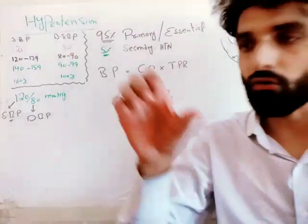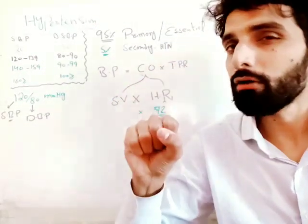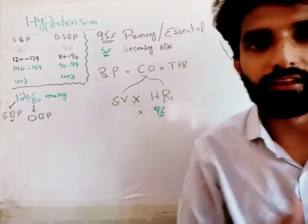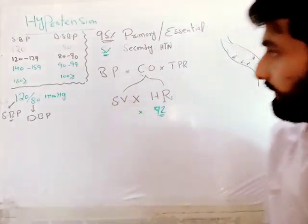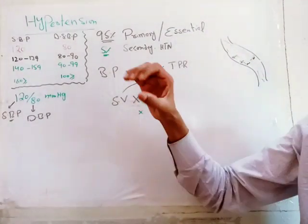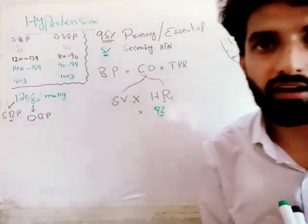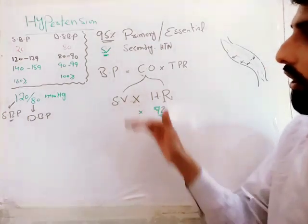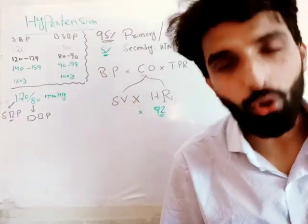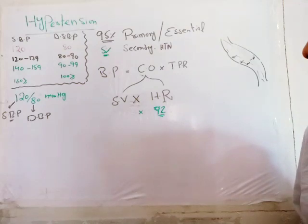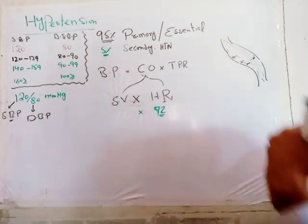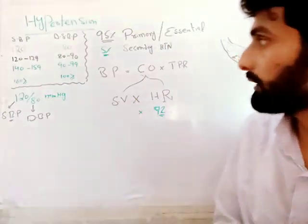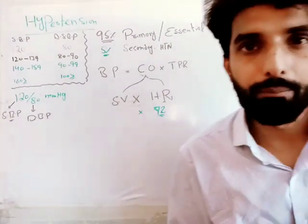Similarly, if the blood vessel has been constricted, TPR will increase and blood pressure will increase. If the blood vessel has been dilated, total peripheral resistance decreases and blood pressure will go down. Now, before moving to the pathophysiology of hypertension, let's talk about the preloads.